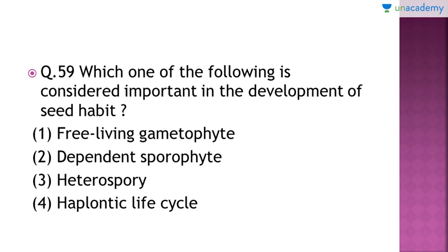Question number 59: Which one of the following is considered important in the development of seed habit? The right answer is heterospory — when the formation of heterospores, that is mega spores and micro spores, started, the development of seed habit is considered to begin. In higher plants, micro spores turn into pollen grains and the mega spore turns into the egg, and when the pollen grain fertilizes the egg, seed formation takes place.